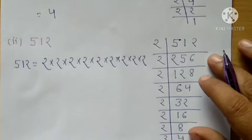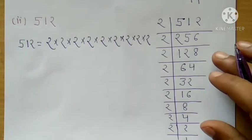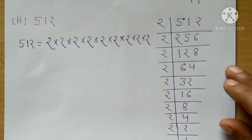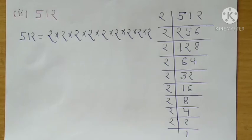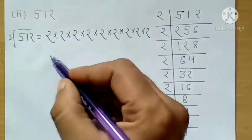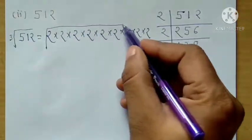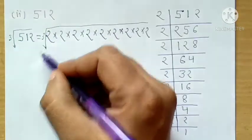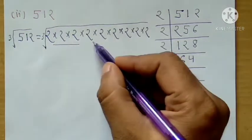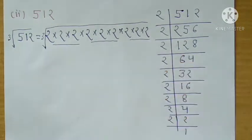Let's take one more question. The next question is 512. Now we need to find the cube root. So what did we say earlier? Prime factorization. First, we find the prime factors. I have told you that the cube root can be written using the cube root symbol. Both notations mean the same thing.